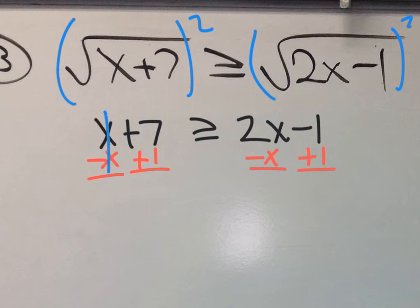The x take away x cancels the 7 plus 1 is 8. The inequality stays the same because we didn't multiply or divide by a negative. On the right side the 2x take away x is going to be a single x, 1x or just x and then the 1 and negative 1 cancel out.